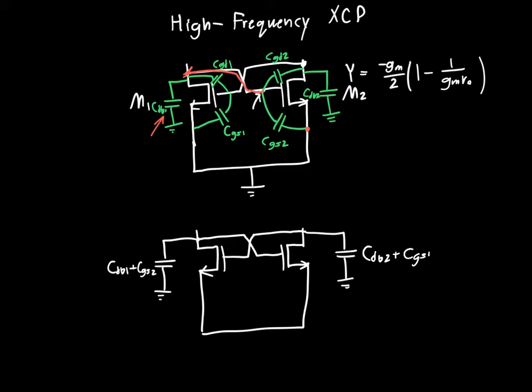And then the only ones we have left to worry about are CGD, and again, we're going to do a little dragging trick. So if we drag this node over here, we see that it connects M1's gate to M2's gate. And similarly, if we drag this capacitor's node here, we see that it also connects M1's gate to M2's gate. So this just results in a capacitance between the two gates. That's CGD1 plus CGD2.